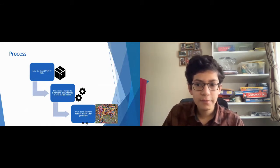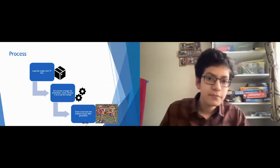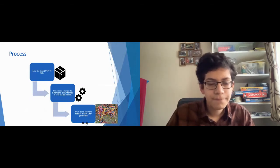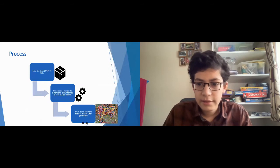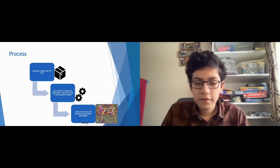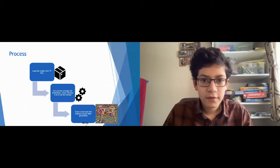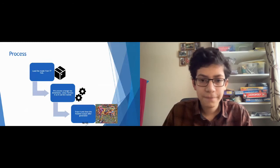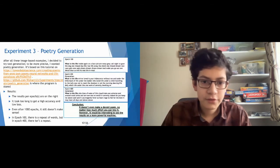So, after all these image-based examples, I decided to try text generation. To be more precise, I wanted poetry generation. So, the results I got, it took a very long time to get a high accuracy and a low loss. Even after a thousand epochs or a thousand iterations, it still doesn't make sense. And the experiment shows that the more time is required for results you want and for more understandable results. And you can see here, there's a lot of repetition of words here in the first hundred epochs, such as dream, dream, dream. Then, if we go straight to epoch 400, there is very few repetition of words. So, it is very slowly understanding poetry and text generation.